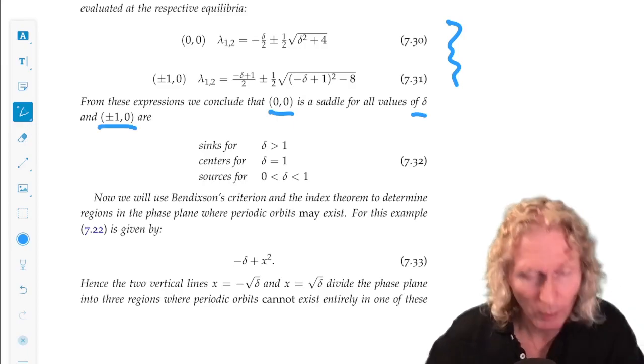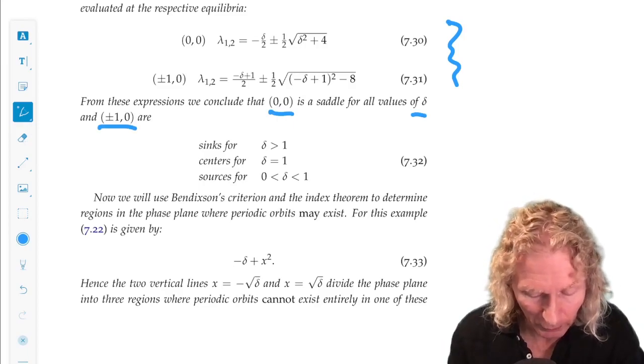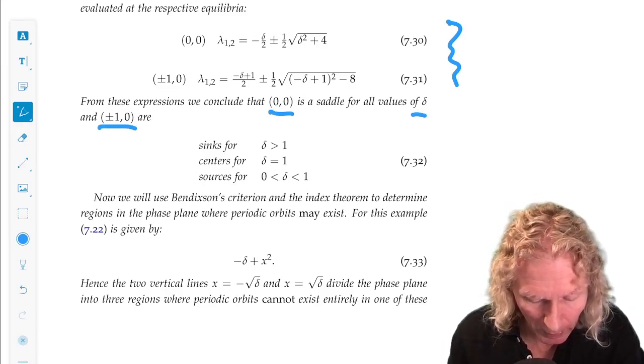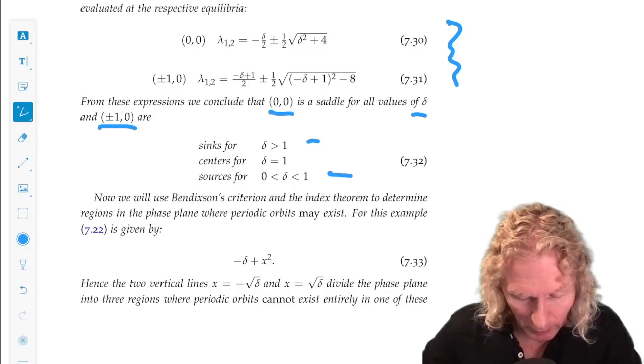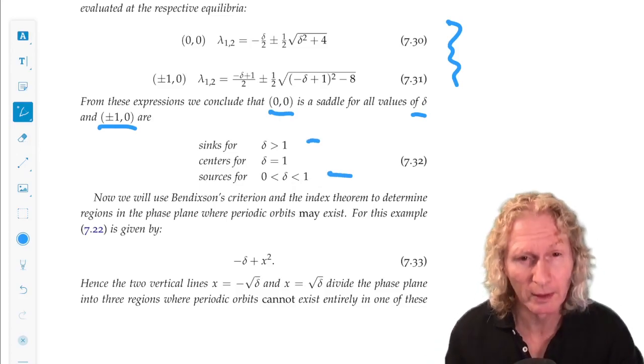And we can verify that the origin is a saddle for all values of delta. And plus or minus 1, 0, there are sinks for delta bigger than 1, sources for delta between 0 and 1, and a center at delta equal 1.